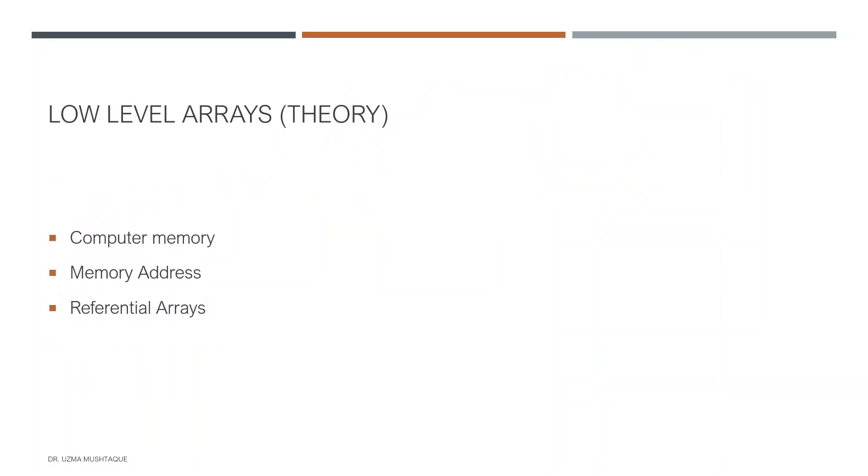Low-level array theory is something a programmer needs to know. For a proper understanding of the outward semantics for a class, it's important to understand what's happening inside. In this lecture we're talking about low-level computer architecture that deals with array classes. We'll talk about computer memory, memory address, and referential arrays.